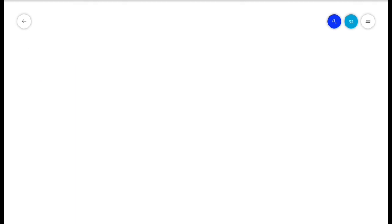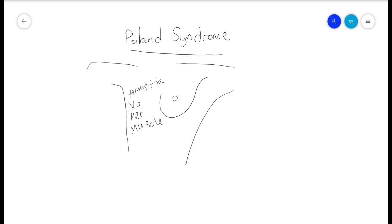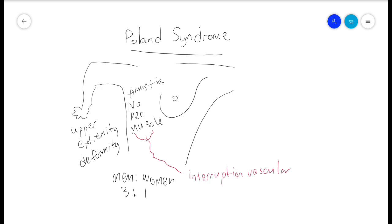Let's talk about some high-yield benign breast problems. Poland syndrome is amastia, which means there is no breast tissue, and usually has absence of the pectoralis muscle with upper extremity deformities. Poland syndrome is more common in men than women by three to one and is thought to be due to an interruption in the vascular supply to the chest in utero.